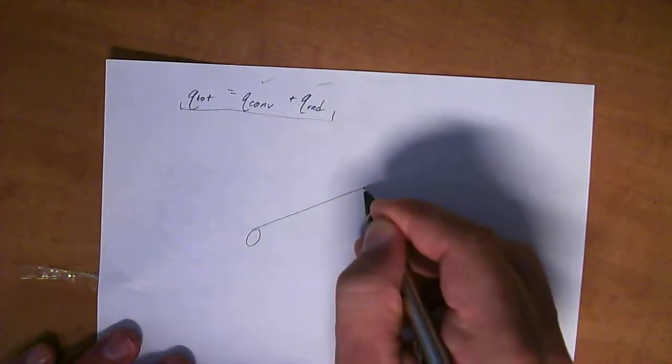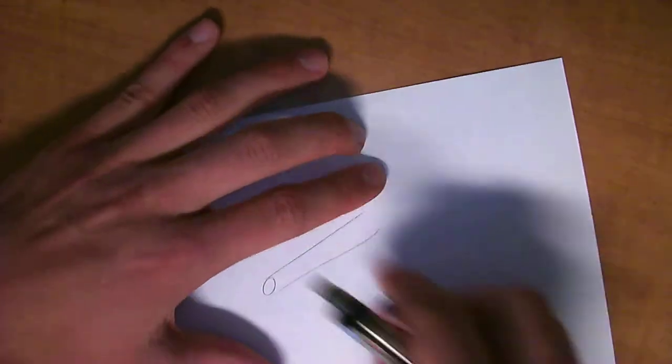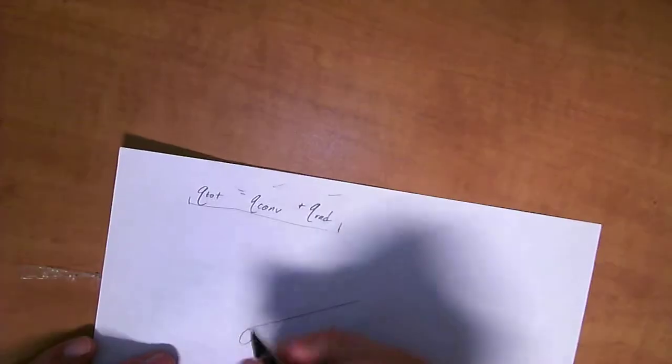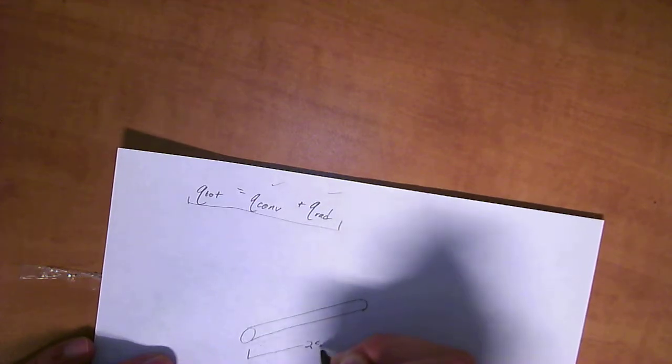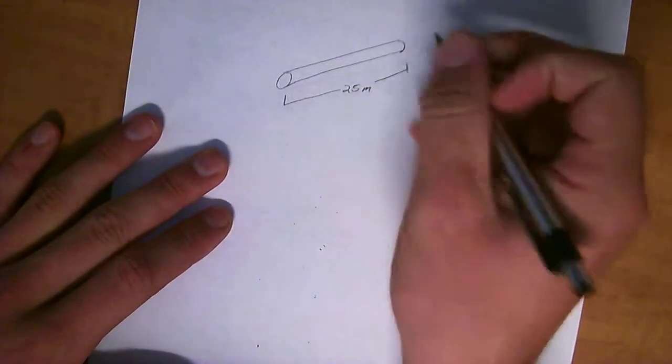So we've got a pipe just like this. That's a bad drawing. Make that prettier. A pipe just like this, 25 meters long, just like that.